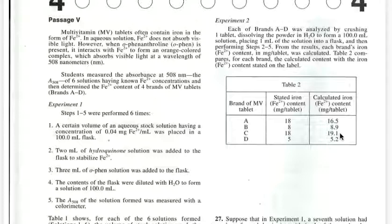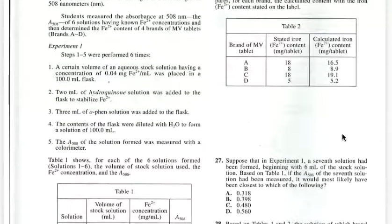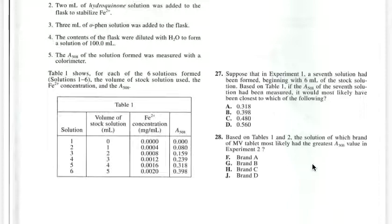And we have to look at the calculated iron content because if you look at just the stated iron content, A and C have an equal iron content value, but when you calculate it, C has the greater value. So the answer is C. So the answer is H, Brand C.